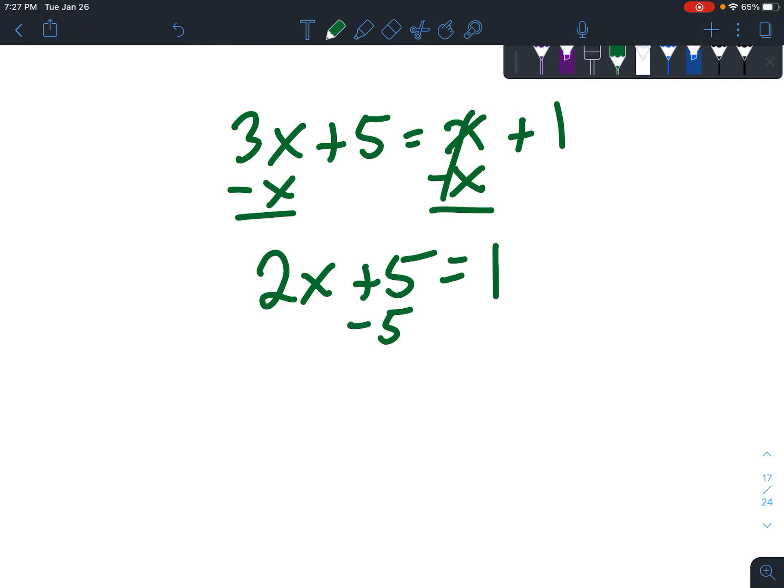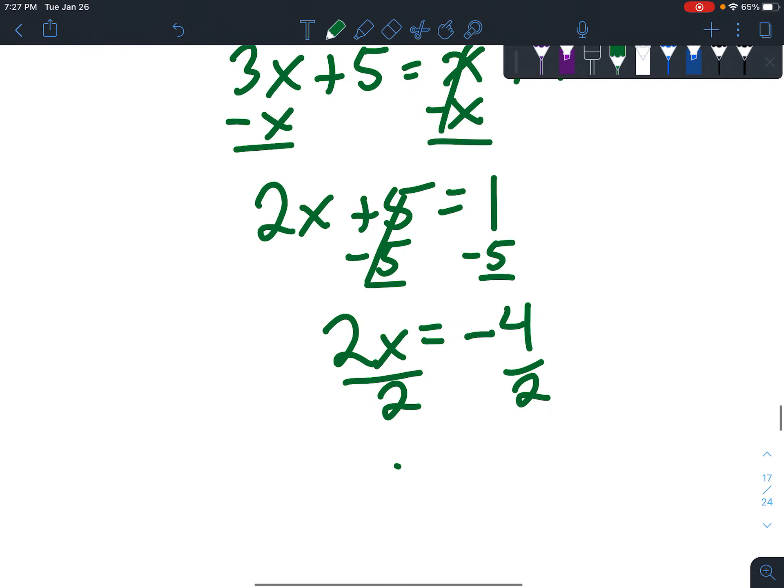So we end up with 1 minus 5 is negative 4. Divide both sides by 2, and X = -2. Alright, that's it for today, and we'll save exponents with different bases for tomorrow. Talk to you later, bye!